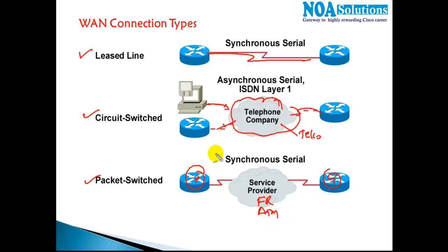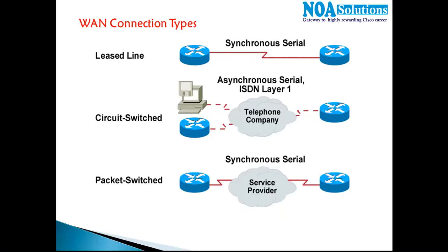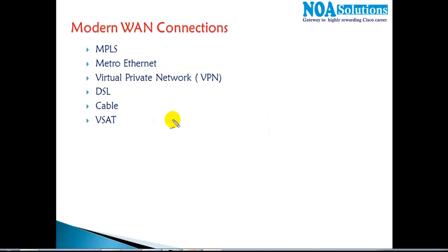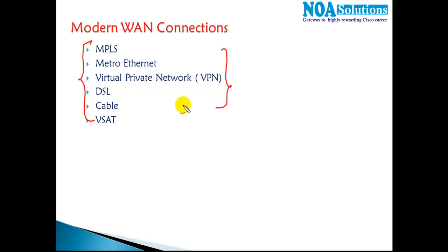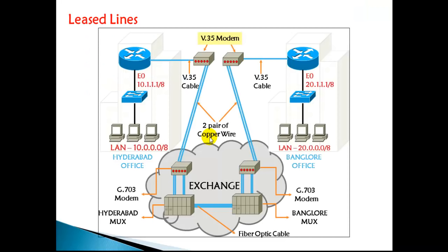More detail on leased lines, ISDN, and Frame Relay connections will be covered in the next sections — there's a separate session dedicated to WAN technologies. I also have more modern WAN connections like MPLS, Metro Ethernet, and VPNs which I'll discuss in detail in a separate session. At this point I'm going to give some idea on how the basic leased line setup is done.